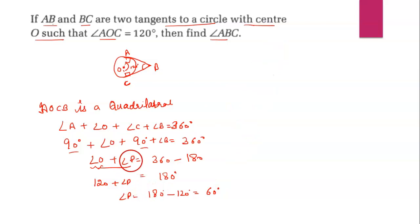This is angle B. Therefore, the answer is angle ABC equals 60 degrees.